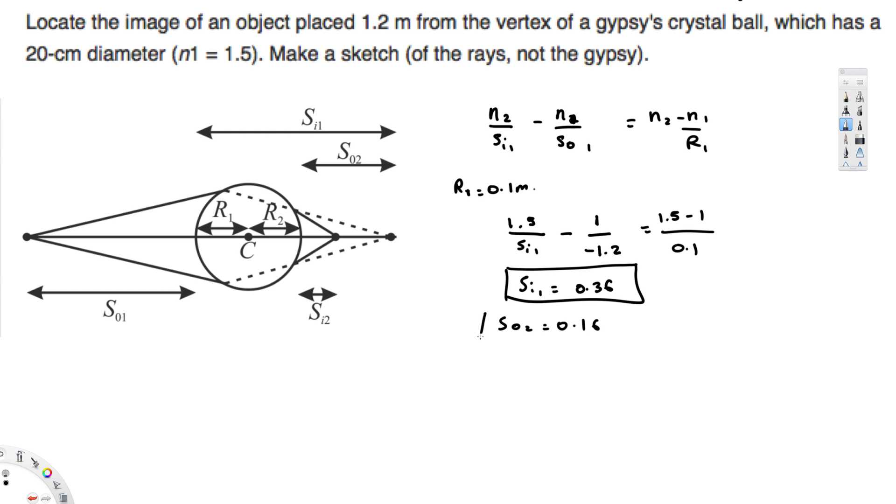So we have sᵢ₁, sₒ₂. And in the question they have asked: locate the image of an object placed. Okay, so we are trying to find image distance. Our purpose is to find sᵢ₂, right? So we found out sᵢ₁, now we have to create the equation for the second surface.